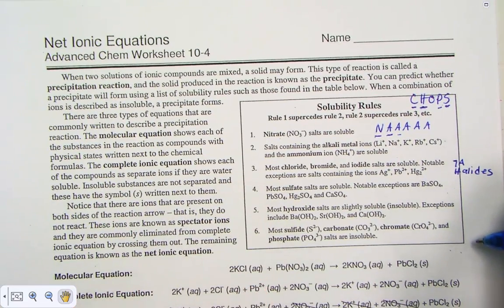Reminding us of an easy term, CHOPS NA, gives us a great background in determining whether or not a precipitate will form.